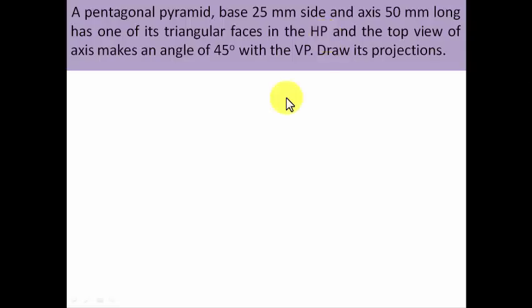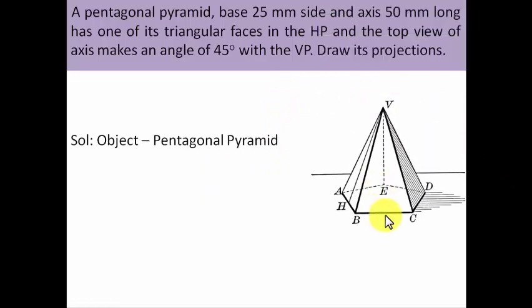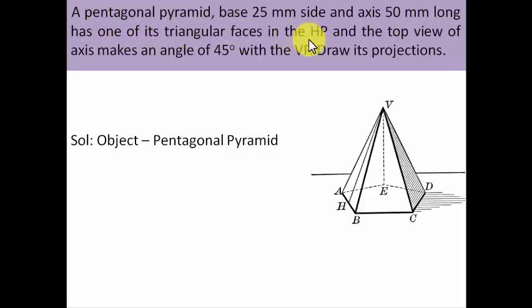Let's extract data from the problem. The object is a pentagonal pyramid. All sides are 25mm each and the axis length has been given as 50mm. There is one triangular face in absolute contact with the horizontal plane — that will be implemented in step two. In step three we need to make sure that the top view of the axis makes a 45-degree angle with the VP.